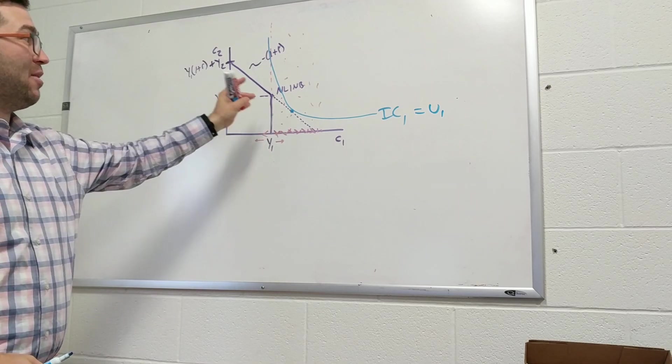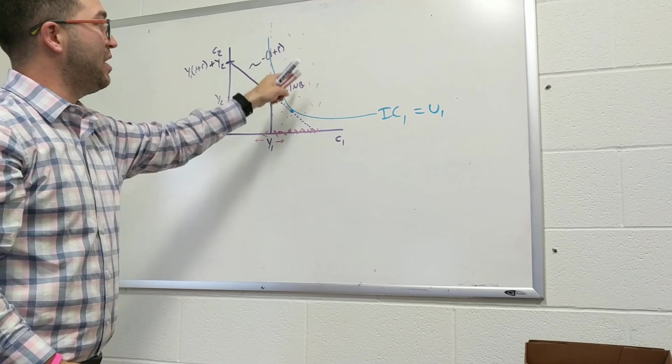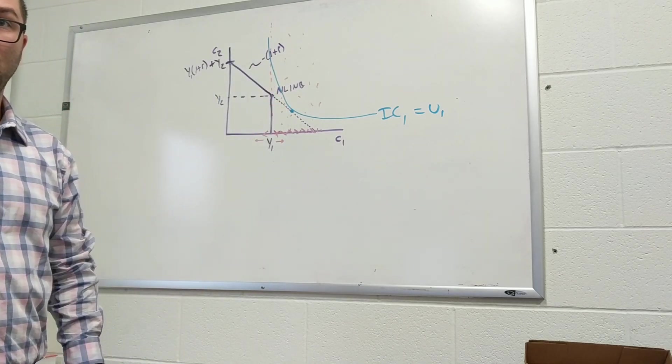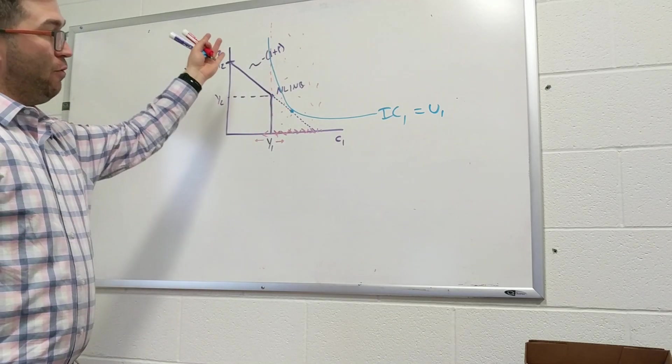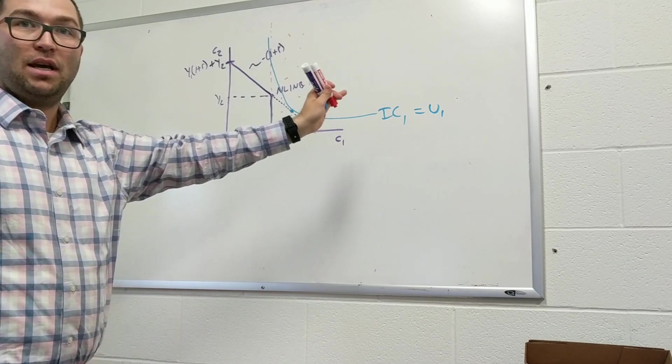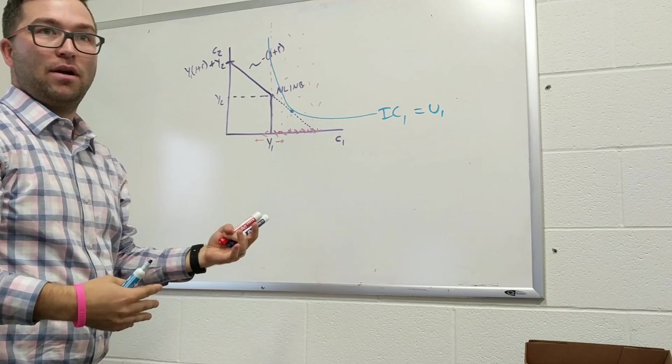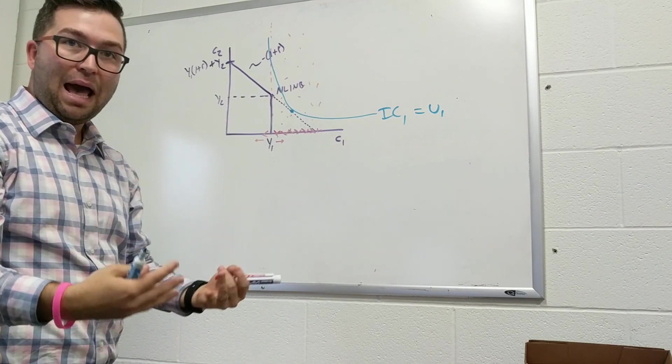He can't reach it, because all of these points on this indifference curve are where these red dots are, which is outside of his budget constraint. Remember what an indifference curve is showing us. It's just an entire indifference plane. There's an infinite number of these that's just showing, as I move away from the origin, I become happier, because as I consume more, I become happier.